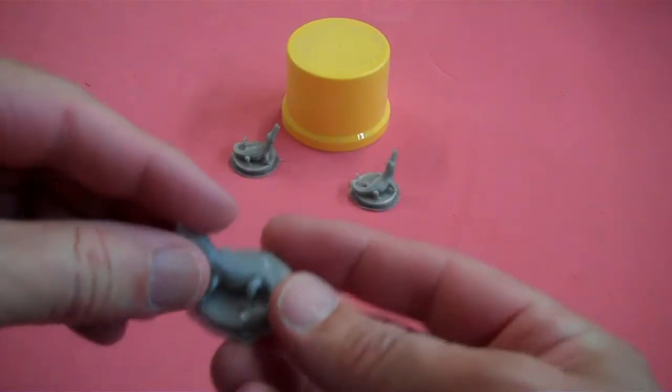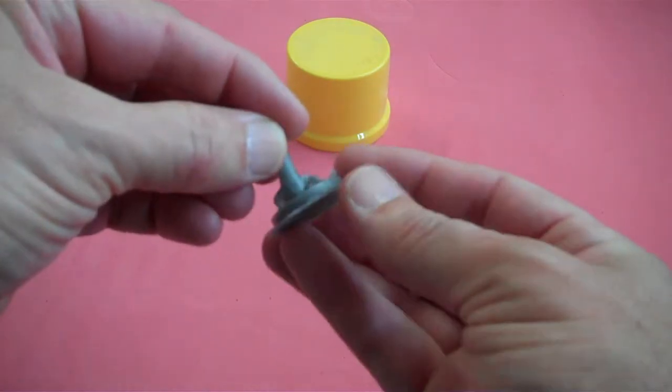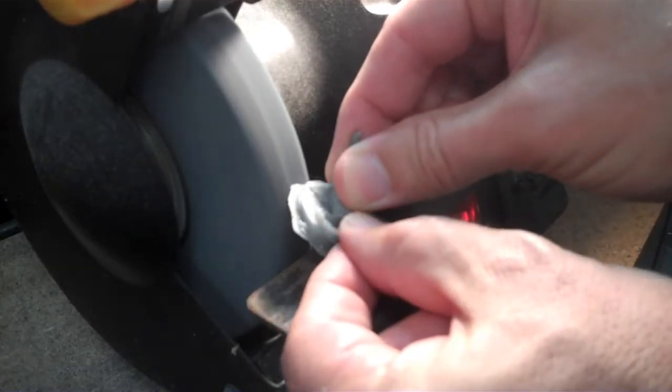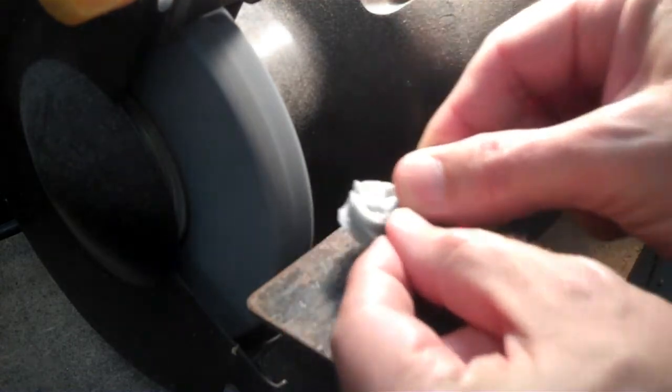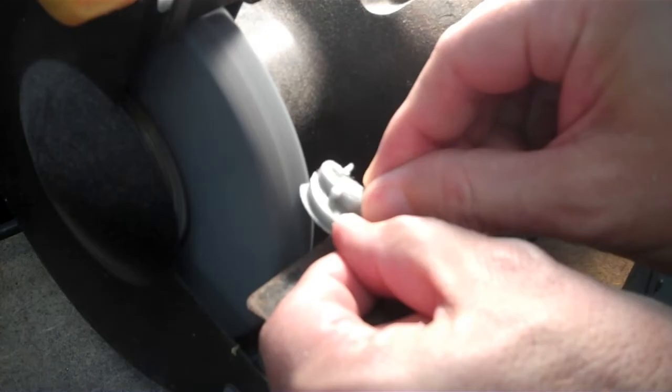I used the default settings on my slicing software, which made a brim around the base of my figures that I had to take off using a grinder and a large file. If I were doing this again, I would turn that option off because the base on this figure is just fine for printing.